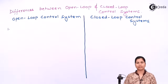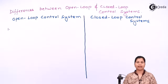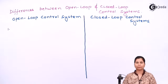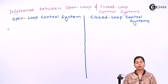The first difference between the open loop and closed loop control system is that open loop control systems are simple in construction because they have very few components. Whereas the closed loop control system is very complicated in structure because there are many elements involved in it, and feedback elements are also present in it.